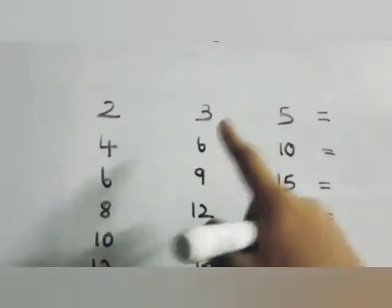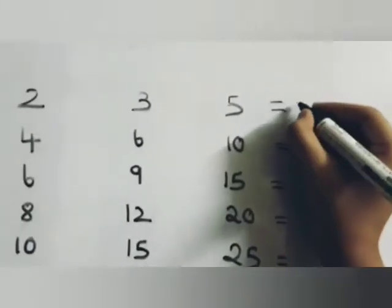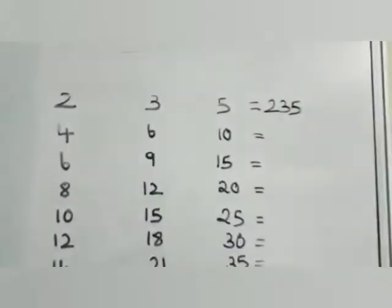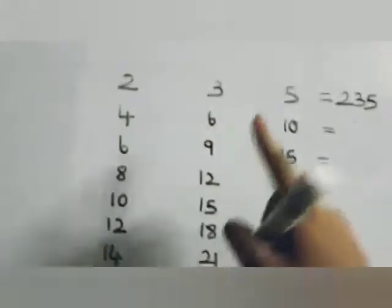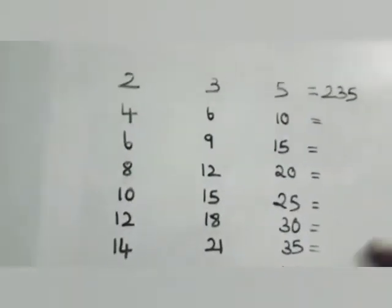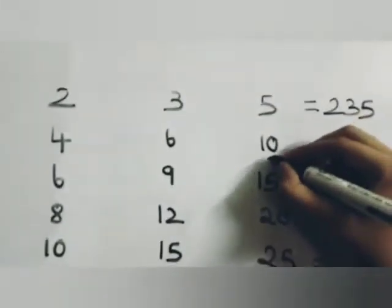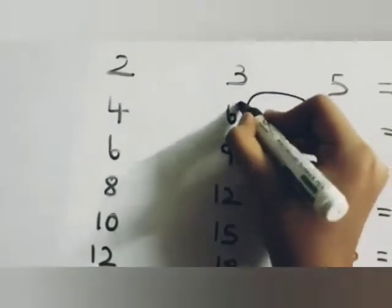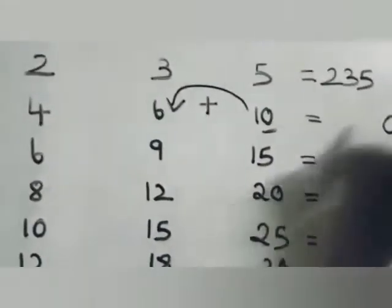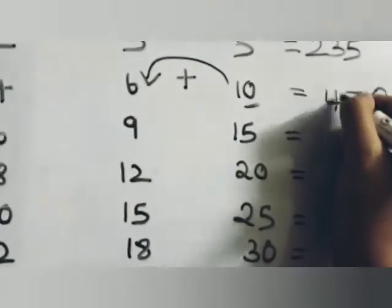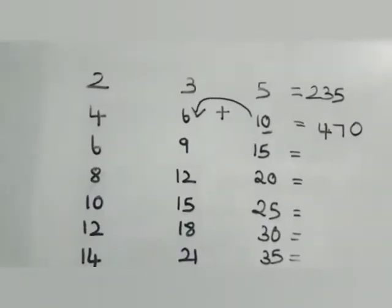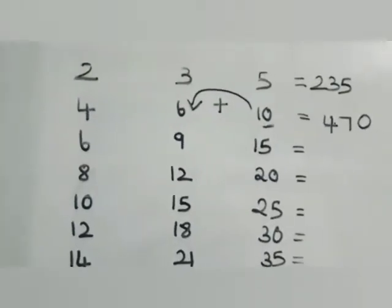First line: write two, three, and five as such, because 235 times one will be 235. But the next row is four, six, and ten. We take the ones place and write it here, then add one to six, so it will be seven — and four as such. So 235 multiplied by two will be 470.